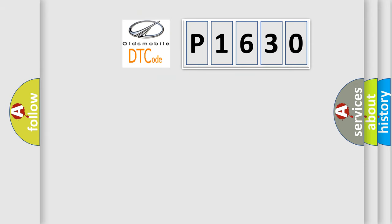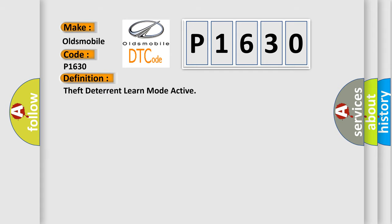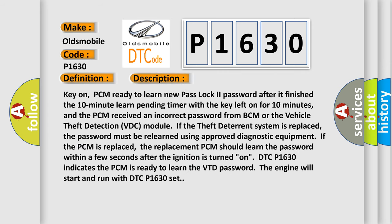What does the diagnostic trouble code P1630 interpret specifically for Oldsmobile car manufacturers? The basic definition is Theft Deterrent Learn Mode Active. Key on — PCM ready to learn new Pass Lock 2 password after finishing the 10-minute learn pending timer with the key left on for 10 minutes.